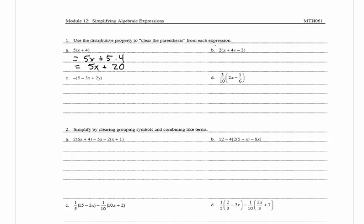In B we have 2 times (x plus 4y minus 3). We multiply each term in the parentheses by 2. So we have 2x plus 2 times 4y minus 3 times 2. That gives us 2x plus 8y minus 6.